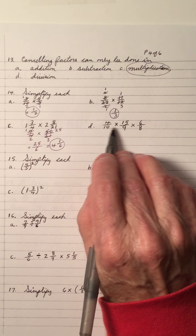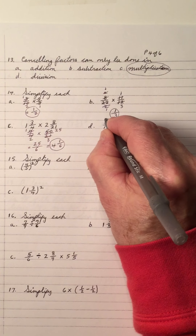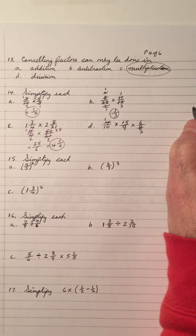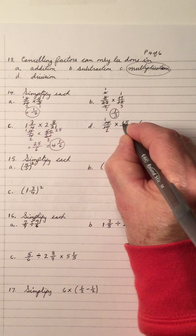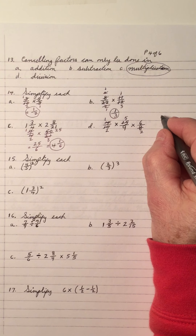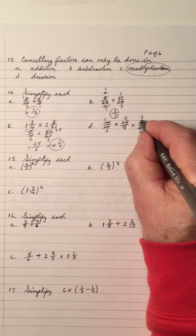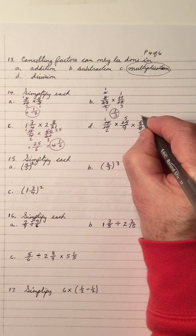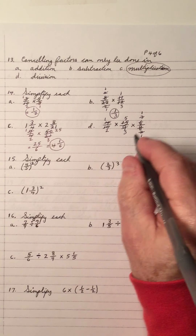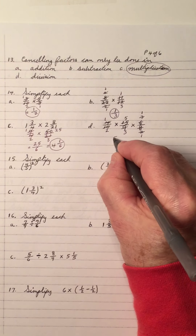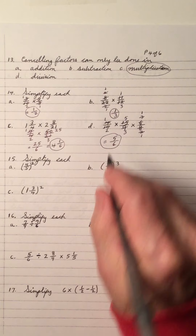Multiplying fractions — no mixed numerals, so cancel anywhere from top to bottom. Take 4 on top canceling into 8 to give 2. Take 5 and divide into 10 twice and into 15 three times. Take 2 and divide into 6 to get 3. Take 3 and divide by 3, and 9 divided by 3. That gives 1 times 5 times 1 on top, which is 5, and 2 times 3 times 1 on the bottom, which is 6. Answer is 5 over 6, fully reduced.